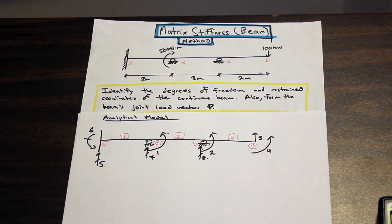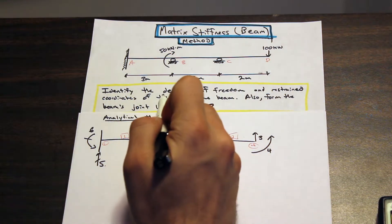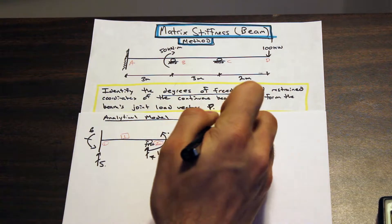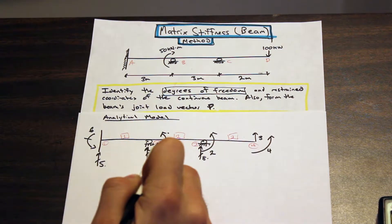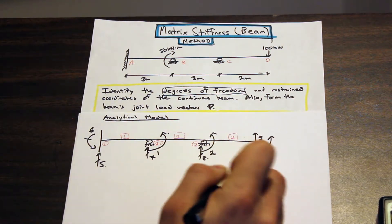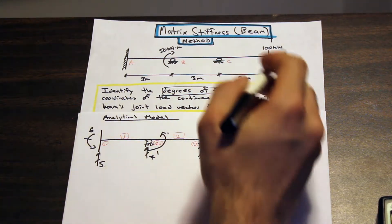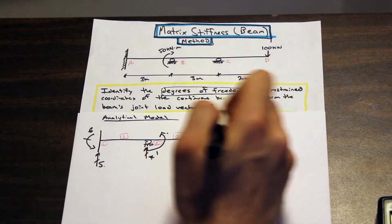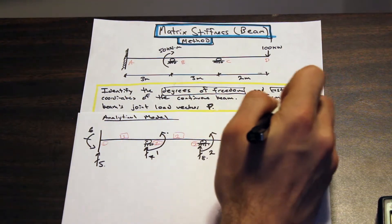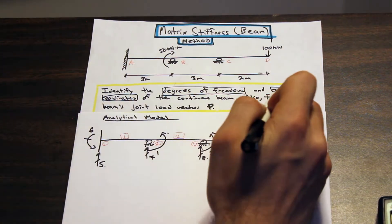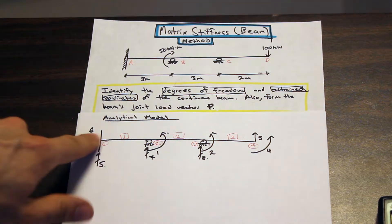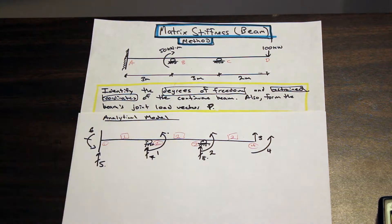The analytical model is finished. What the analytical model gives us is actually two things we're asked for: the degrees of freedom — one, two, three, and four at joints two, three, and four — and the restrained coordinates, which are the reactions: five, six, seven, and eight.